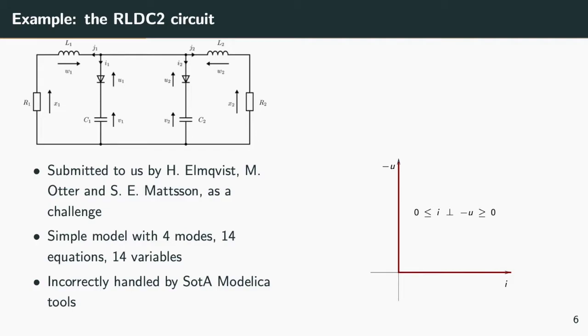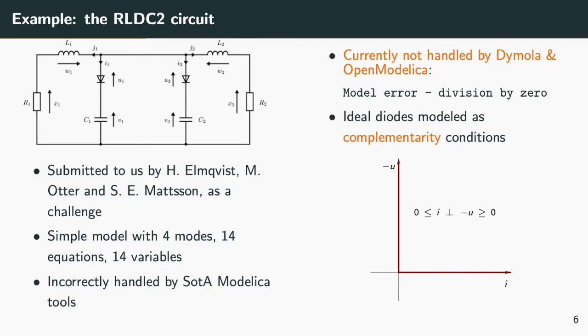Here is an example. It consists of two RLC circuits in which we have inserted a diode. So this example has been submitted to us by Hilding Elmqvist and his colleagues as a challenge because it is the archetype of a multimode model that is not supported by state-of-the-art Modelica tools. It is a multimode model because the diodes are assumed to be ideal in the sense that it is either conducting with zero resistance or blocking with zero conductance. We have two diodes. Therefore, the model has four modes.